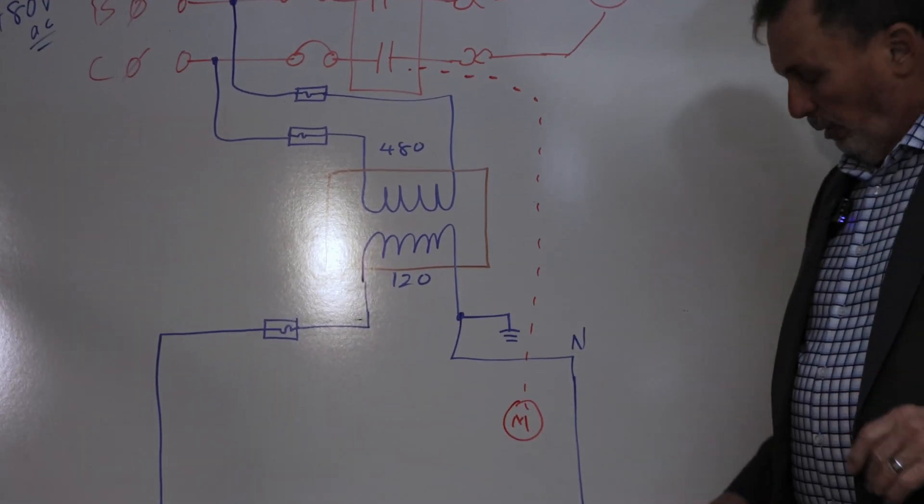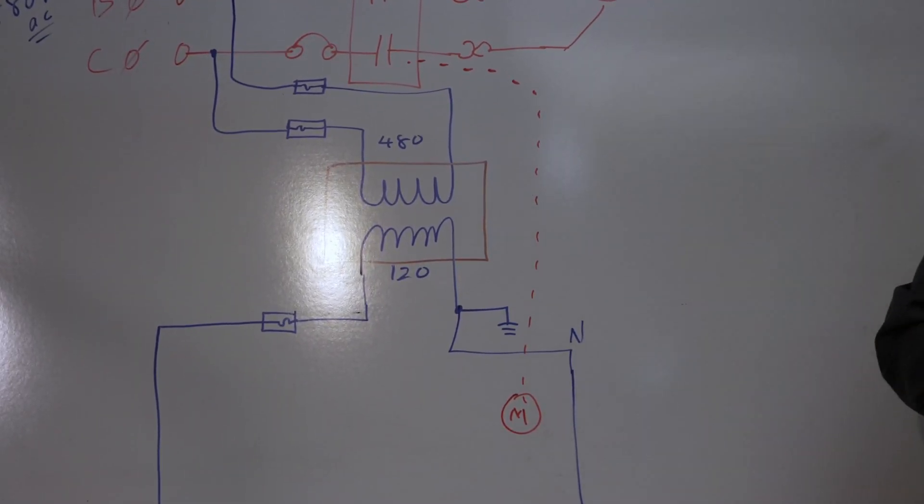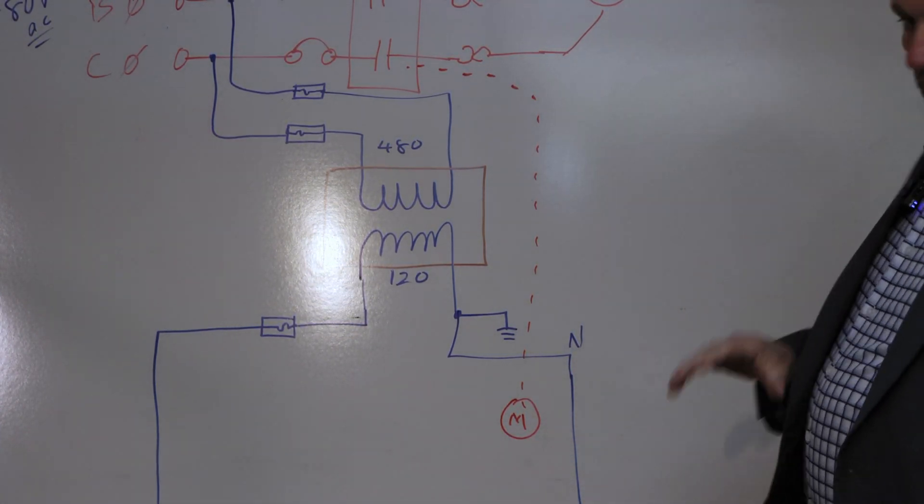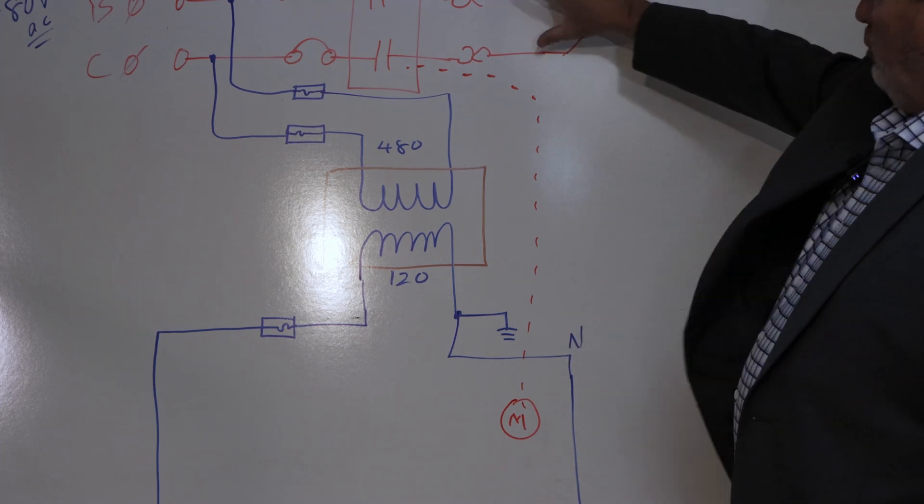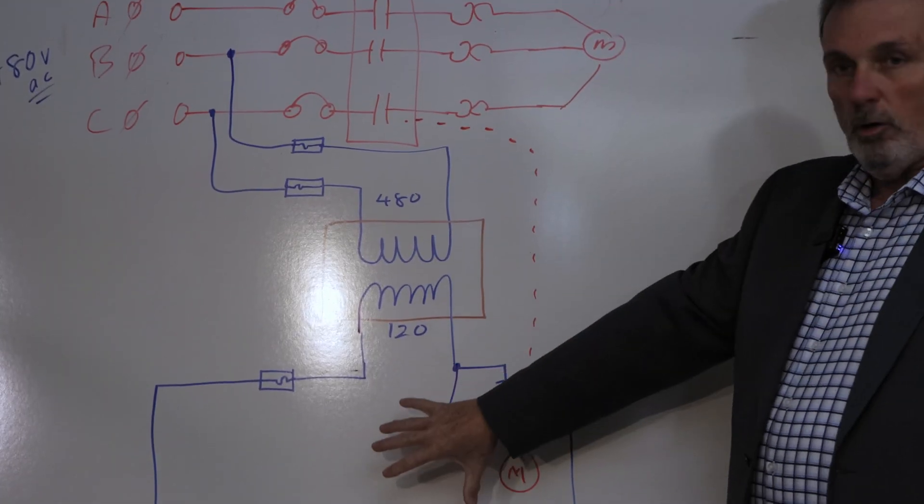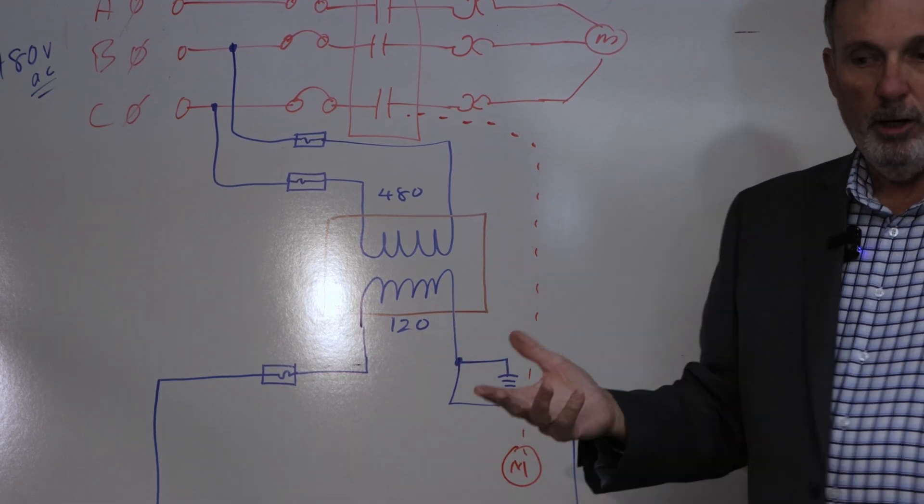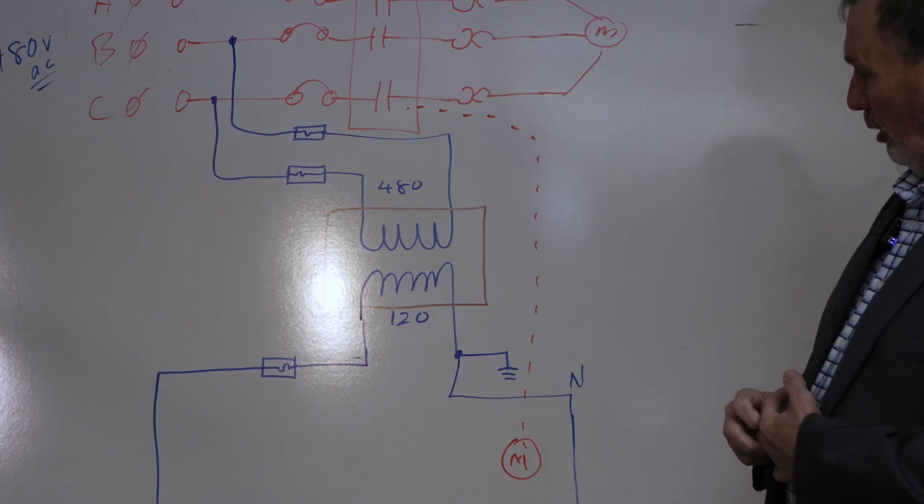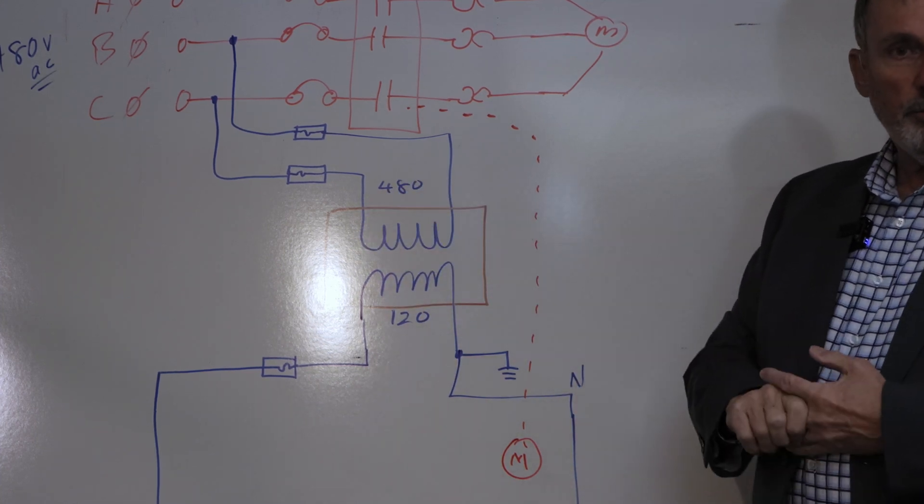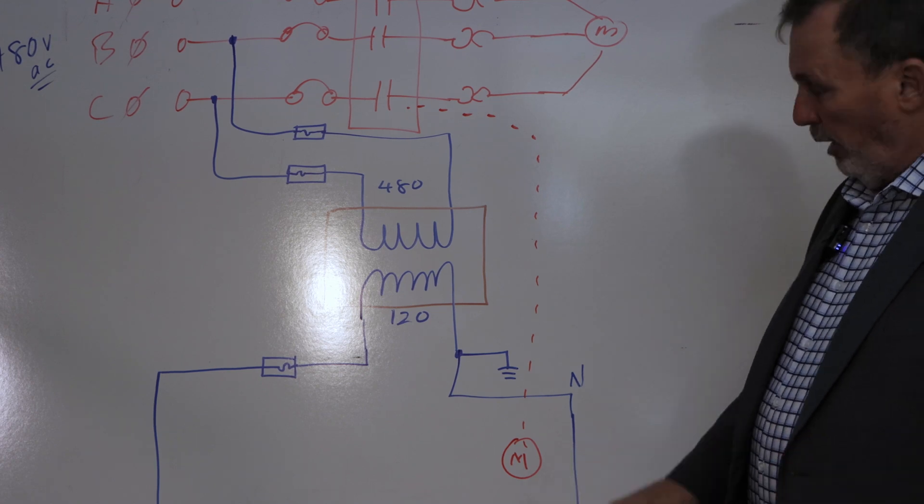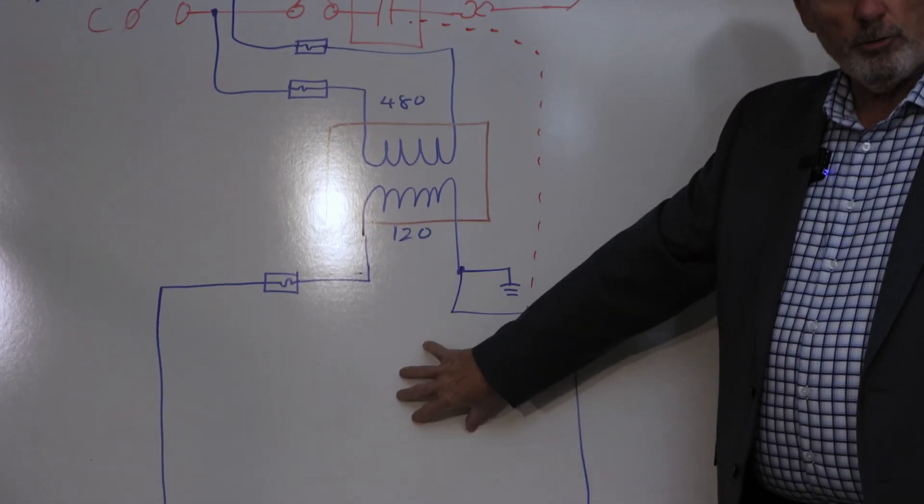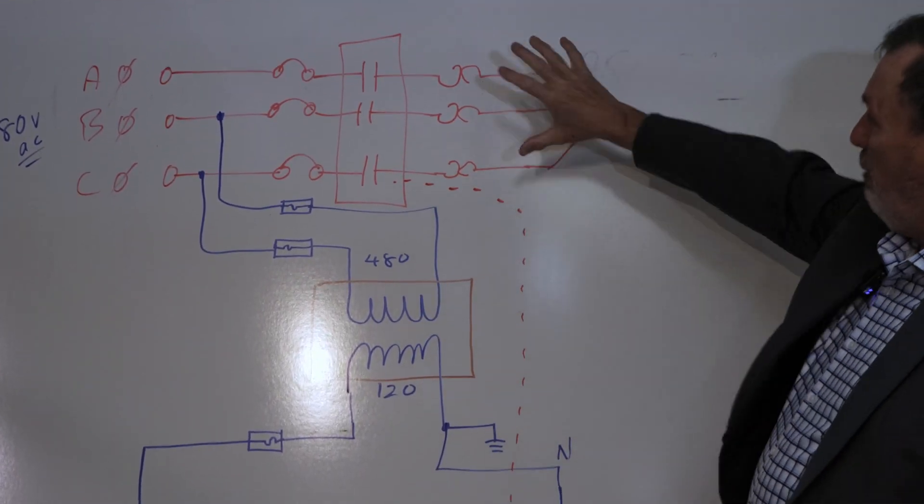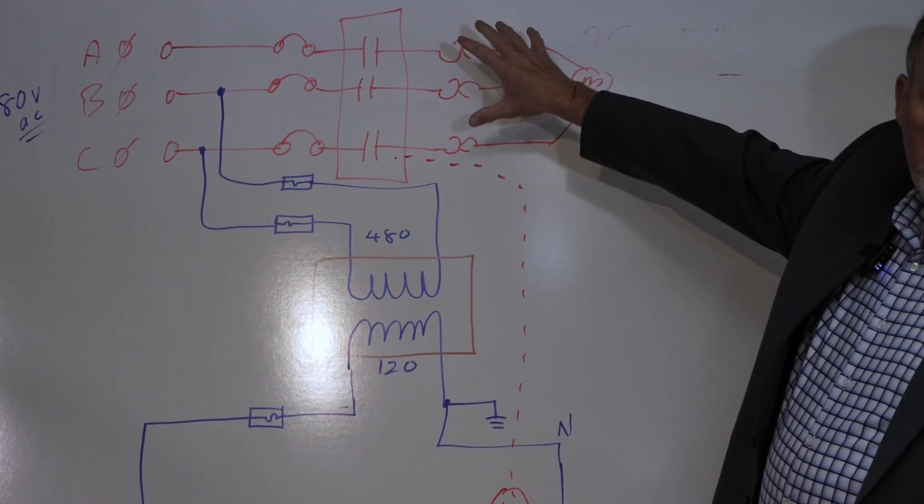Something that I've been trying to get my students to understand, and it often takes a couple of shots, there's absolutely no common current flow between the motor current and the control current. As a matter of fact, by code, this control transformer, although it falls under a number of exceptions, constitutes a separately derived system. So there's no electrical connection between the control circuitry and the power circuitry, even though the control circuitry makes the motor start.